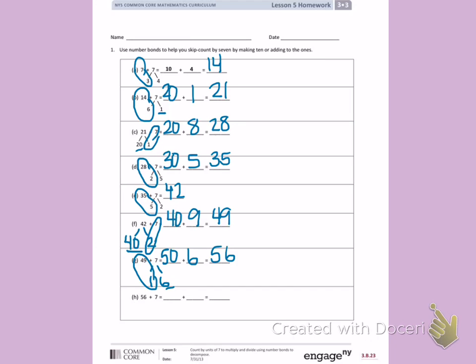Letter H. I'm going to decompose 7 into 4 and 3 again so I can make a ten. 60 plus 3 more is 63.